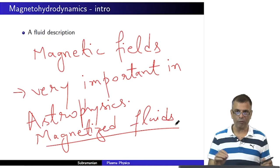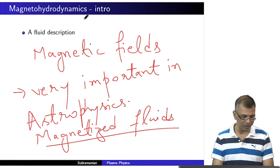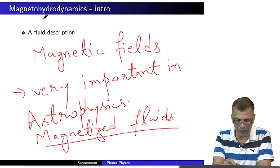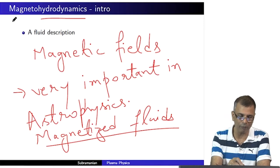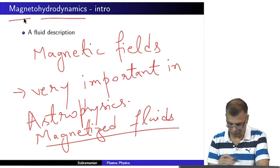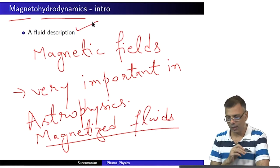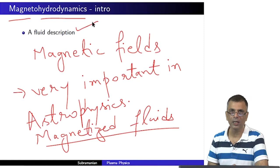This field is called magnetohydrodynamics — it is a bit of a mouthful, but you understand what this means. It is hydrodynamics, which is what we have been talking about so far, with magnetic fields — hence the name magnetohydrodynamics. The first thing to note is that it is a fluid description.